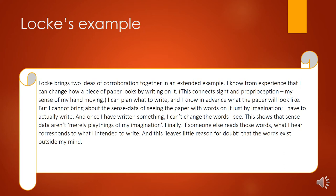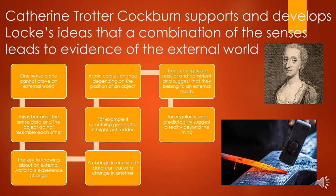So we've got the corroboration of moving, seeing, and other people corroborating our experience. Locke on the corroboration of different sensations is backed up by someone we haven't looked at before: Catherine Trotter-Cockburn. She really supports and develops Locke's ideas on this — that a combination of the senses leads to evidence of the external world. She starts by saying that one sense alone cannot provide or prove an external world, because the sense data and the object do not resemble each other, as we know through the secondary qualities.